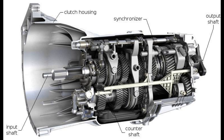Hydraulic Torque Converter: It is a special type of automatic gearbox based on fluid coupling. In this type, an impeller, a turbine, a highly compressed fluid, and a stator are used to obtain different speed or gear ratios, controlled by the accelerator pedal. The impeller of the torque converter is connected to the engine shaft, the turbine is connected to the output shaft, and the stator is placed in between to direct the flow of fluid.